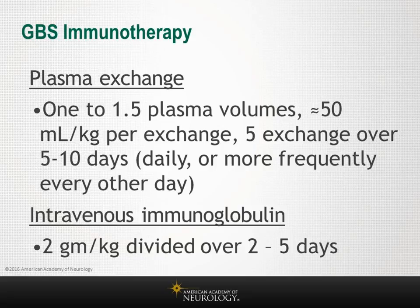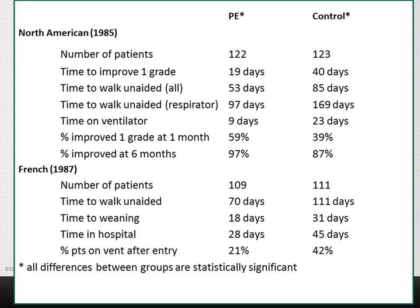The mainstays of immunotherapy are plasma exchange and intravenous immunoglobulin. Plasma exchange was the first treatment proven effective in two large trials — the North American trial and the French trial. In both studies, plasma exchange performed within two weeks of symptom onset demonstrated a statistically significant reduction in time to weaning from the ventilator by 13 to 14 days and in time to walk unaided by 32 to 41 days. The French cooperative study also showed that patients requiring ventilatory assistance were significantly fewer in the plasma exchange group.